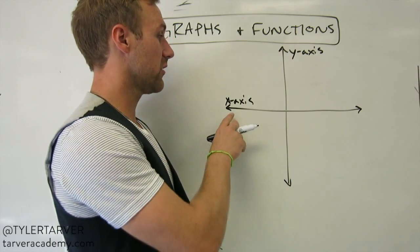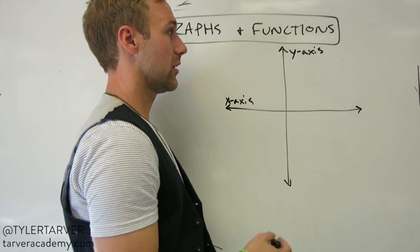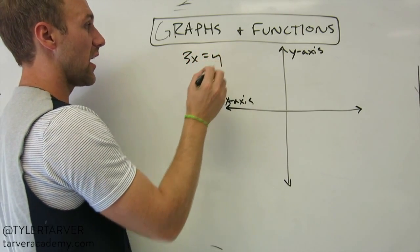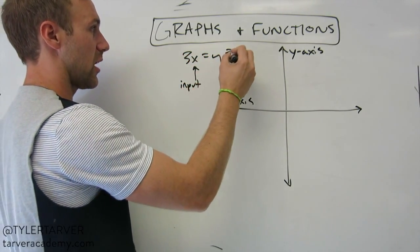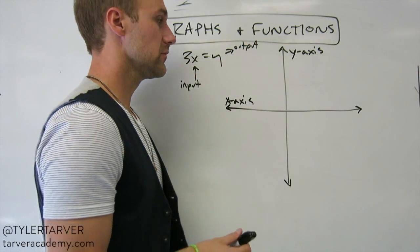Let's say your input goes along the x-axis value. Your output is your y value. For instance, you have 3x equals y. That's your input. That's your output. Cool, cool, cool. All right?